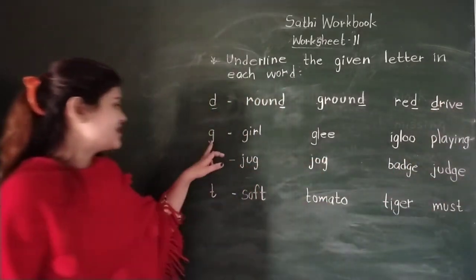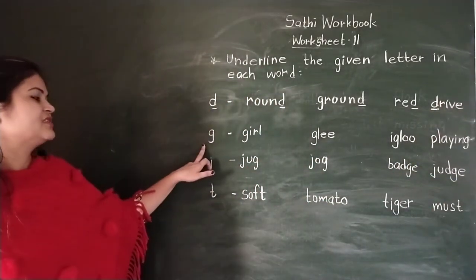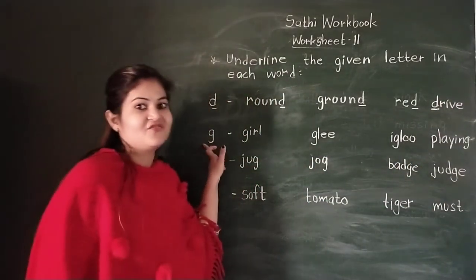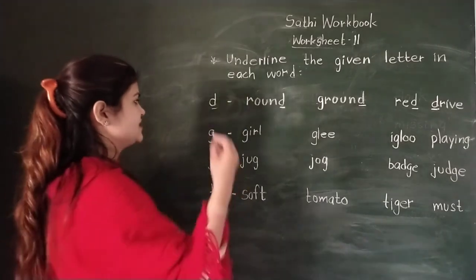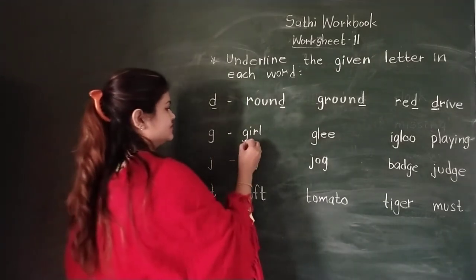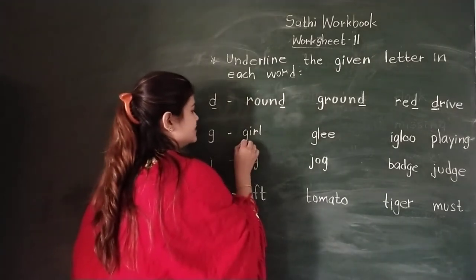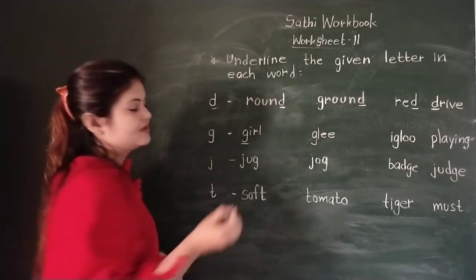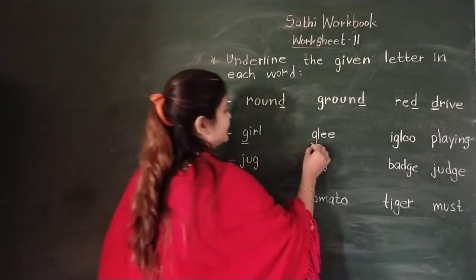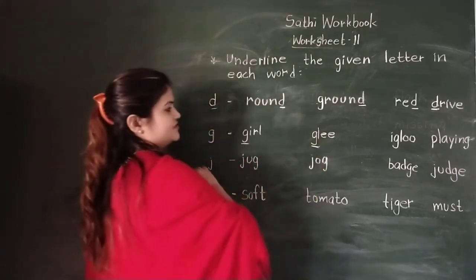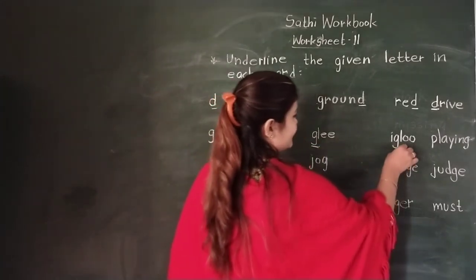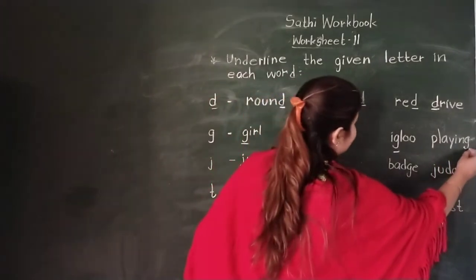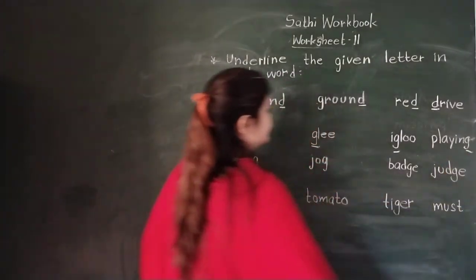Now next letter is G. Which letter is this? Letter G. In 'girl', this is letter G. In 'glee', this letter is G. In 'igloo', this letter is G. And 'plane' - last.